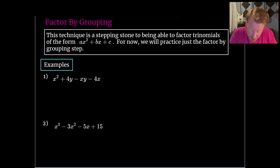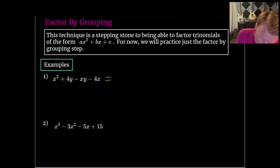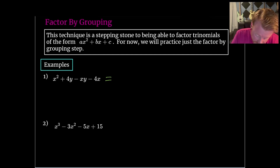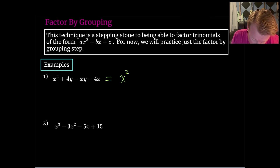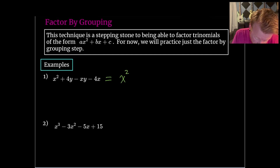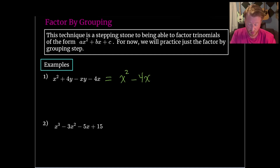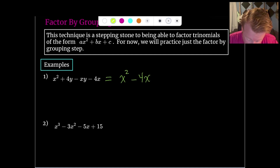But maybe we could find a GCF for some of these terms if we grouped them together. The way this is currently written isn't going to be the best arrangement to group. So let's rearrange — I'm going to keep the x² out front, and then I'll put either the minus xy or the minus 4x next to it. I might go for the minus 4x.